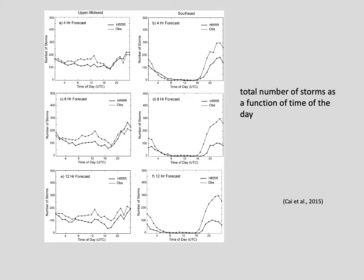This is the diurnal cycle of storm numbers. The left is for the upper midwest and the right for the southeast. The solid and dotted lines are for simulations and observations respectively. In the upper midwest, observations and model simulations have a similar diurnal cycle, meaning there is no apparent timing error in storm initiation and development. In the southeast, however, the model produced much smaller number of storms and the time for storm number to increase is also late, indicating that initiation of new storms is later than observed and the model underestimated storm development.